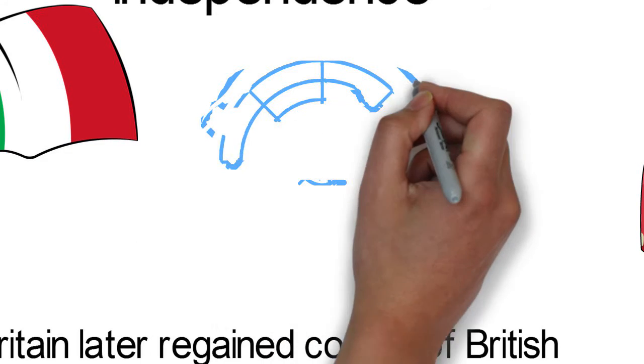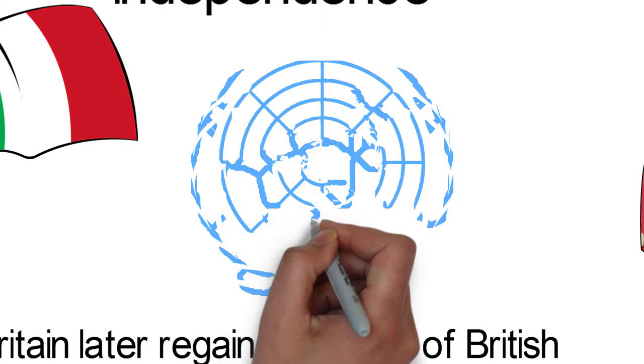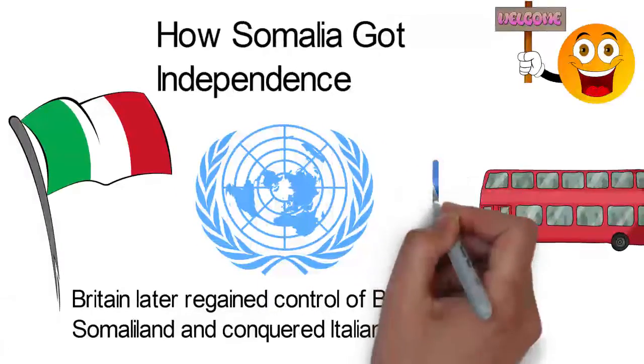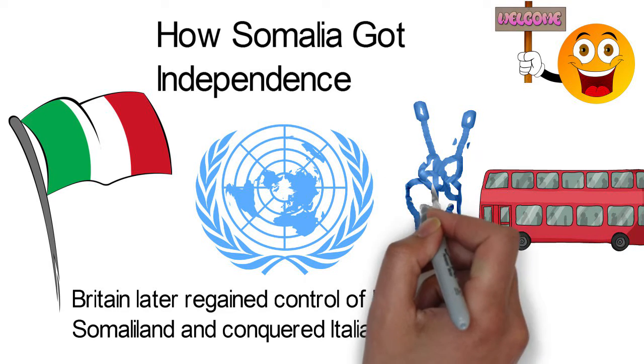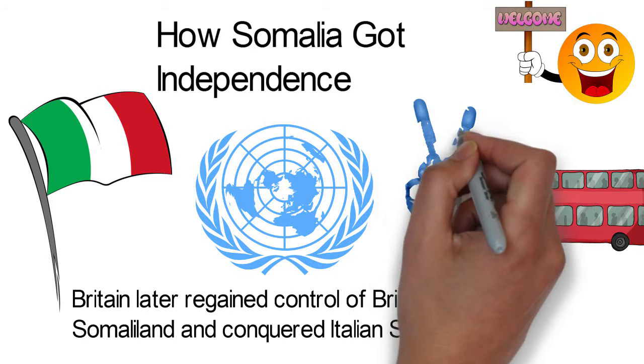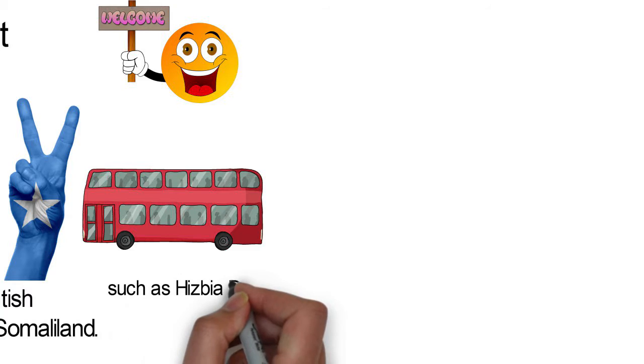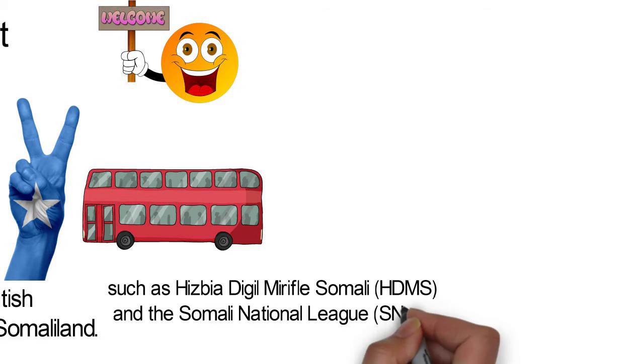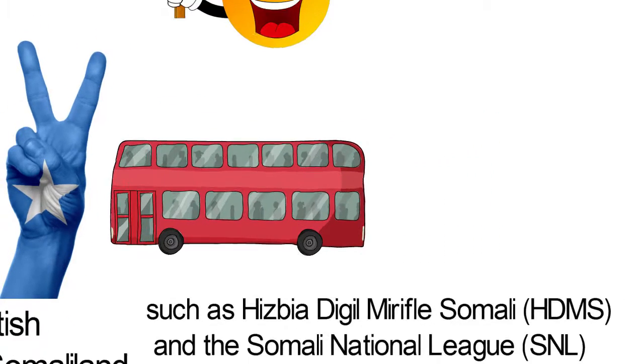In November 1945, during the Postdam Conference, the United Nations granted Italy trusteeship of Italian Somaliland under close supervision and on the condition that Somalia would gain independence within ten years as proposed by the Somali Youth League and other Somali political organizations such as Hizbiadijil Mirifu Somali and the Somali National League. This agreement was not honored as British Somaliland remained a British protectorate until 1960.